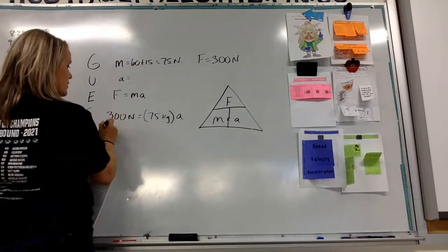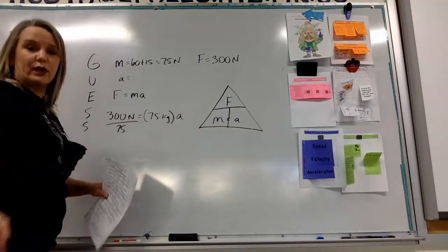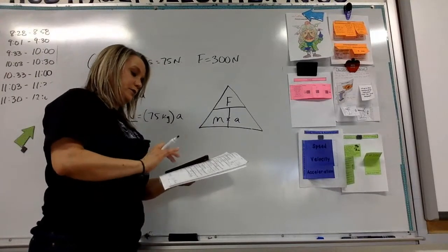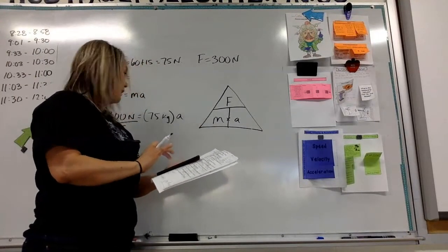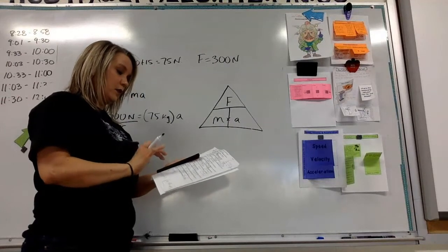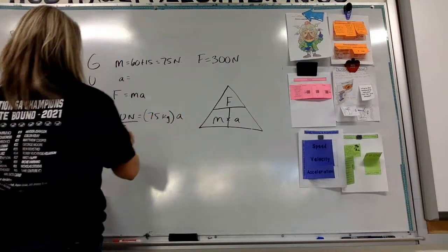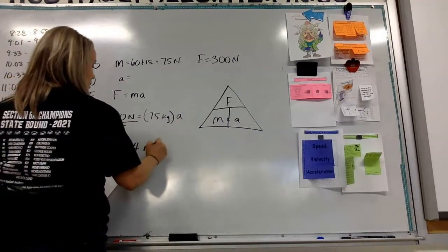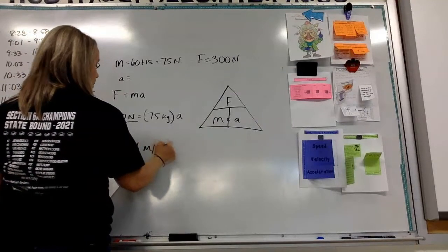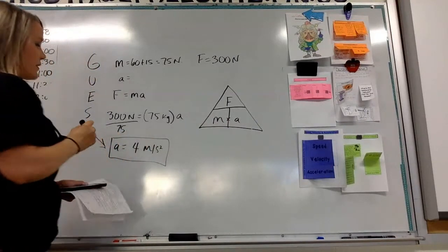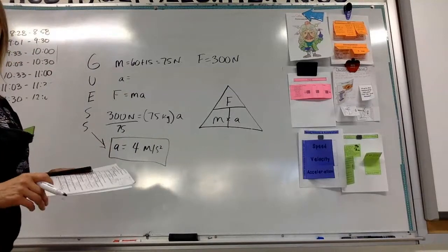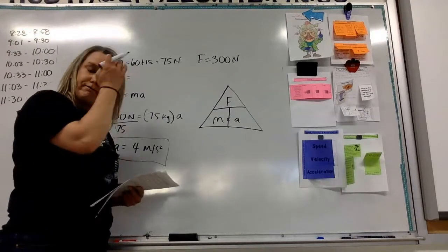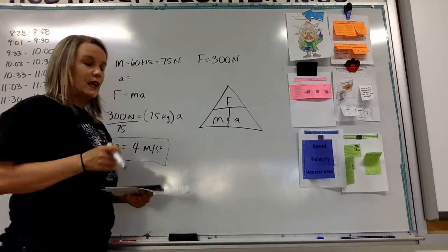So we just have to do force over mass. So, 300, I've got my calculator here, 300 divided by 75 equals 4. So, A, for our solution, A is going to equal 4 meters per second squared. This is our solution here. That's how much that person on the sled will accelerate, given a force of 300 newtons.